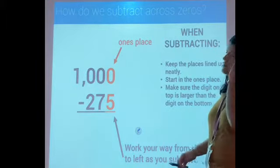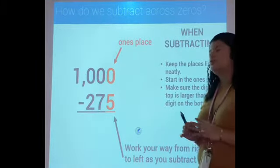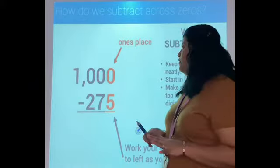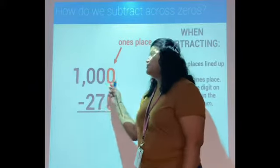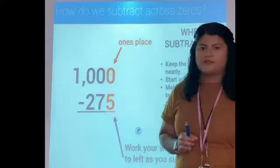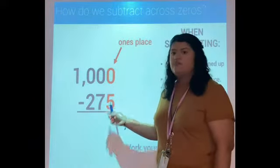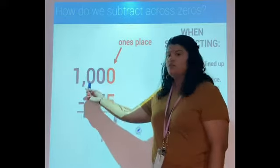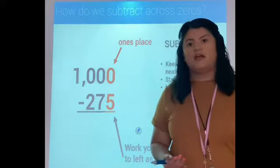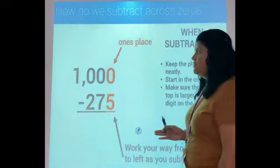Now, whenever you are subtracting across zeros, this is the very first thing you have to do - you want to change these zeros. If you notice here, my 2, my 7, and my 5 are all larger than zero, so I already know I'm going to have to borrow.